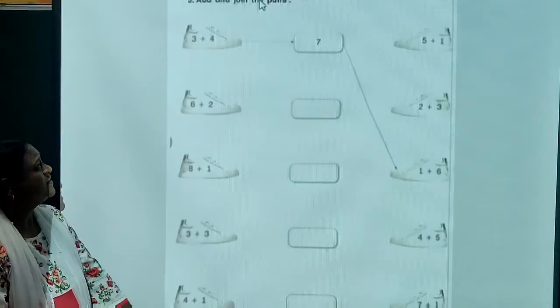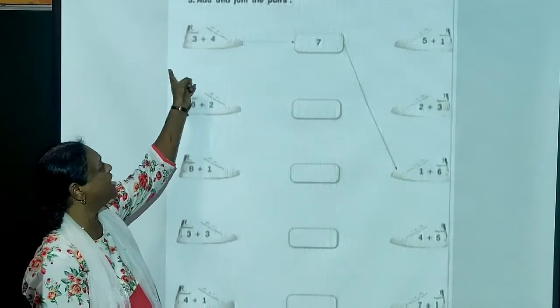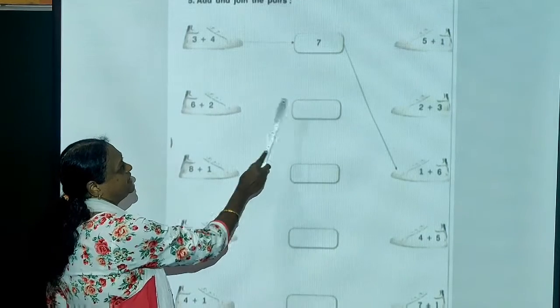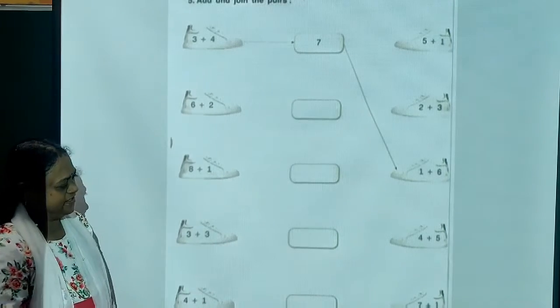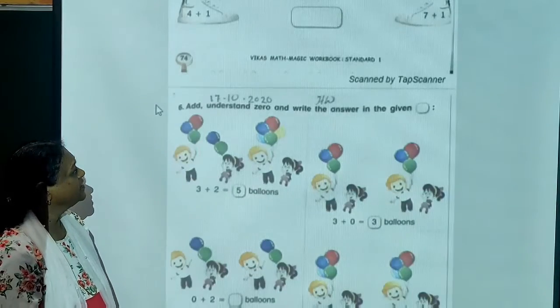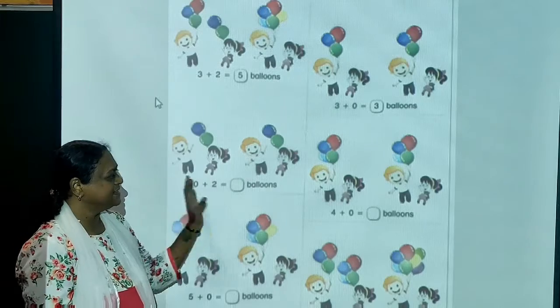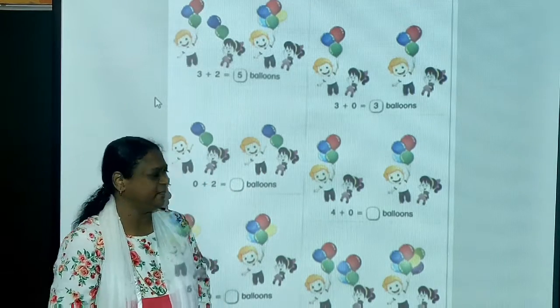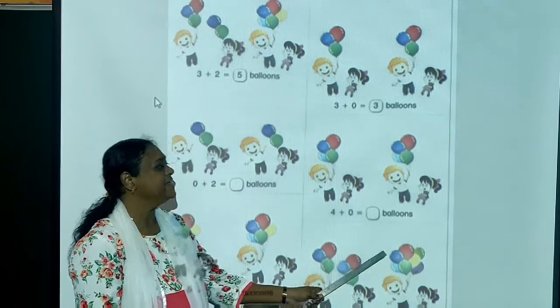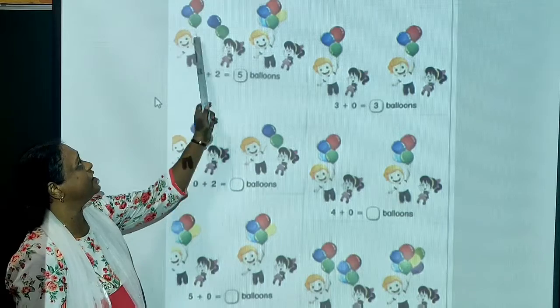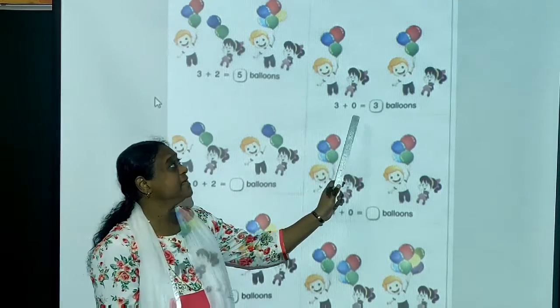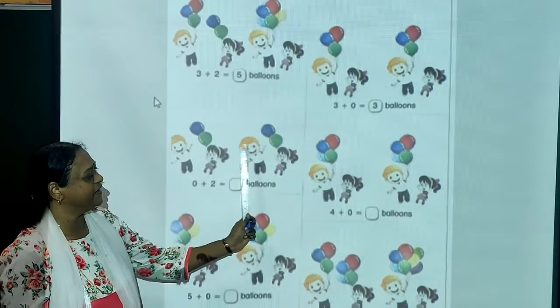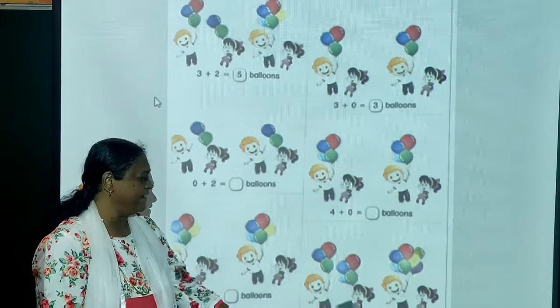Now, second exercise. Here also, you have to count and match. In this one, you have to count and match the numbers also. 6 plus 2 is 8. So write here 8. And where is 8? You have to match. Now, this is the concept of 0. I have already explained you. Any number added to 0, the answer will be the same. You have to count and write the answer.